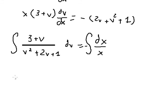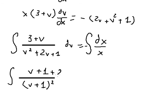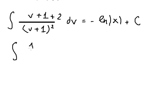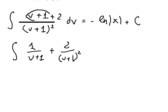On the left side, in the denominator we can write v plus 1 to the power of 2. On the numerator we write v plus 1 plus 2, times dv. On the right we get negative ln of the absolute value of s, plus C. On the left, we split the fraction into 1 over v plus 1, and 2 over v plus 1 squared, because v plus 1 simplifies with v plus 1.